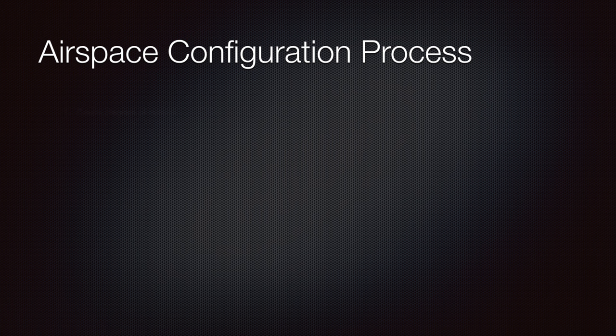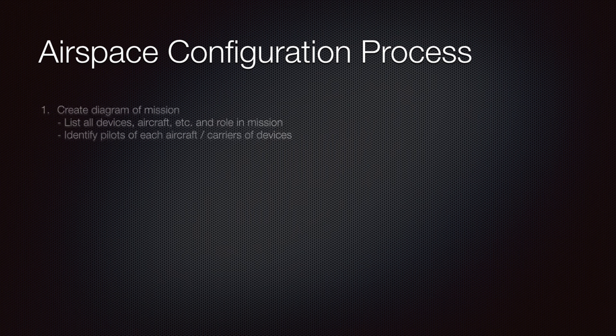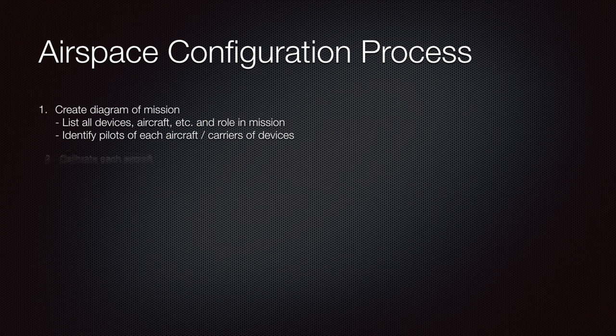Before we put Airspace to work, here is a process to keep in mind as you put together Airspace missions. First, take the time to create a diagram of the mission — list all your devices, the aircraft, and the role within the mission. It's also useful to identify the pilots of the aircraft as well as the carriers of the devices. The more detail you provide pre-flight, the smoother things will go. Next, ensure that your quadcopter is flight ready by checking your hardware, doing the compass calibration, and checking the camera settings, memory card space, etc. You can do this after you create your Airspace as well.